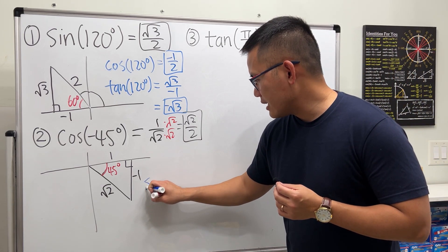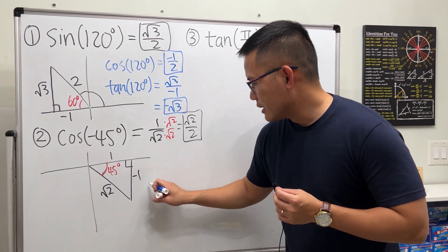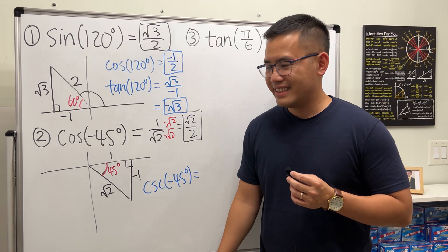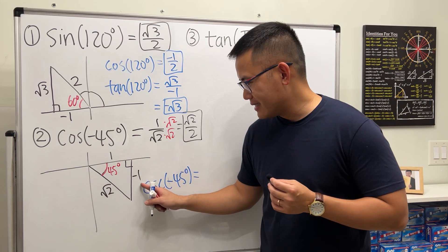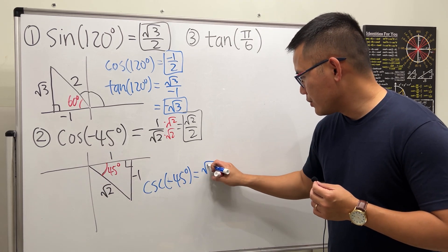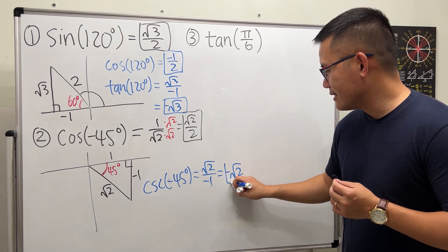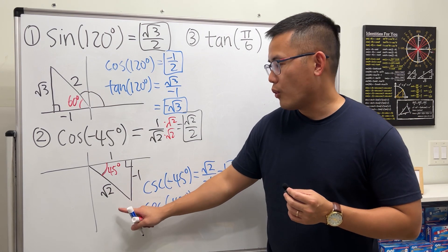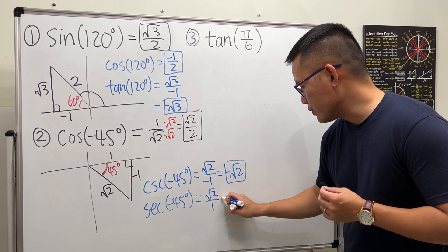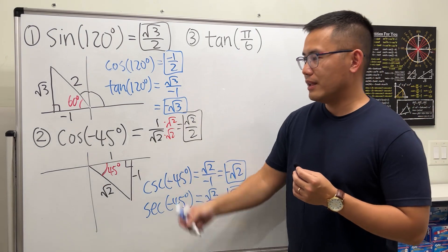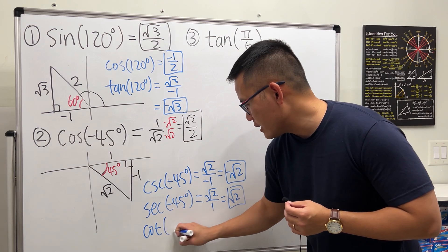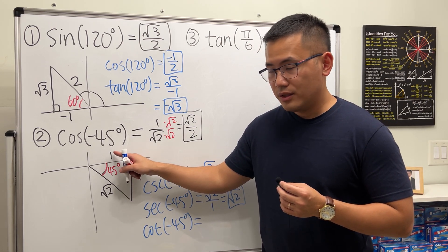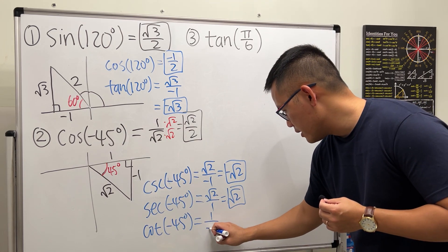Let's also do cosecant of negative 45 degrees. Cosecant is hypotenuse over opposite, so √2 over negative 1, which is just negative √2. Then secant of negative 45 degrees: secant is hypotenuse over adjacent, so √2 over 1, which is just √2 — the reciprocal of cosine. Finally, cotangent of negative 45 degrees: cotangent is adjacent over opposite, so 1 over negative 1, which gives us negative 1.